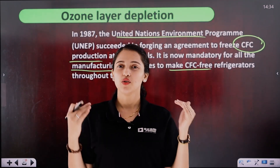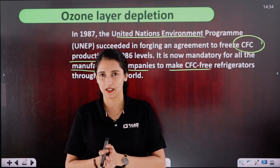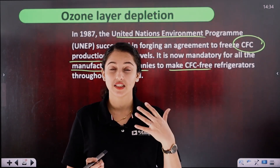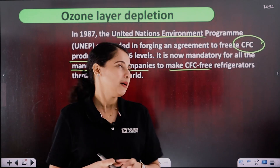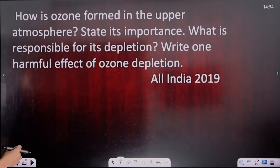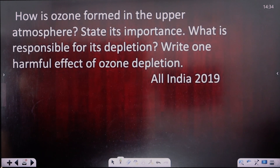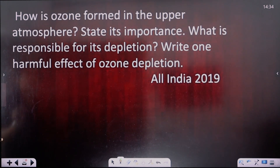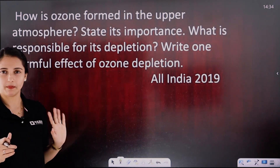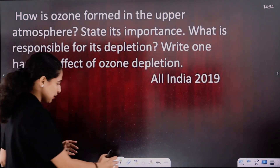That is ozone layer depletion. This topic also comes in exam questions. One common question is: how is ozone formed in the upper atmosphere? State its importance. What is responsible for its depletion? Write one harmful effect of ozone depletion.